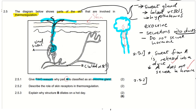Moving to question 2.5.2: describe the role of the skin receptors in thermoregulation. Thermoregulation is controlling the levels of temperature in the body. When it gets hot, your body is still able to maintain a temperature of 37 degrees Celsius because thermoregulation takes place. When we say it is a receptor, it is something that detects a stimulus and converts it into an impulse and sends it somewhere else. So skin receptors detect a temperature change when it is hot or cold.